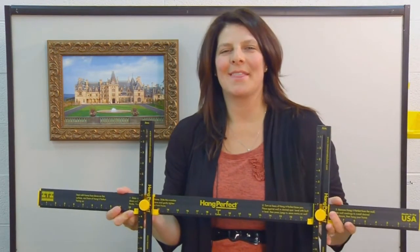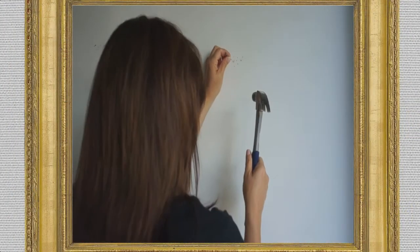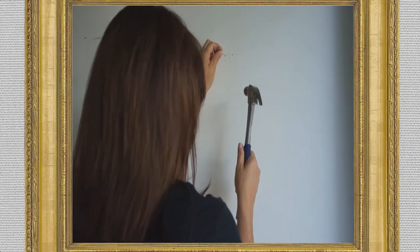You too can hang your pictures perfectly straight and level every time using the Hang It Perfect. No more pencil marks or ugly holes in your wall from unsuccessfully trying to line everything up just right.